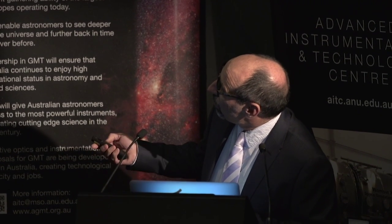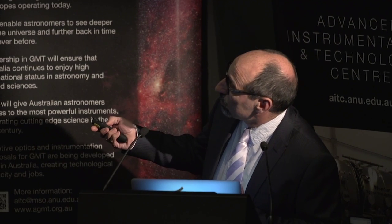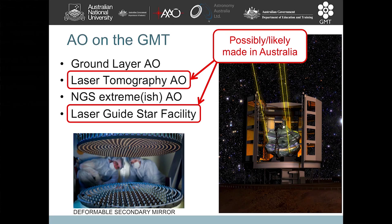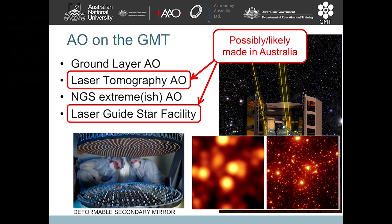There is strong expertise in adaptive optics in Australia. Three instruments plus a laser guide star facility are envisaged for GMT, and we hope to play a major role in two of these: laser tomography adaptive optics and the laser guide star facility. This simulation shows what we should achieve with the GMT without and with adaptive optics.